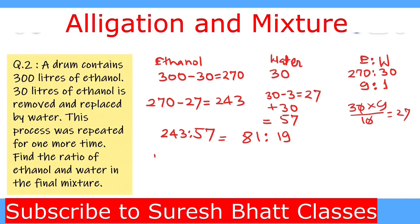We can also solve this by the formula method. Final quantity of ethanol divided by initial quantity of ethanol equals (1 − R/T)^N.